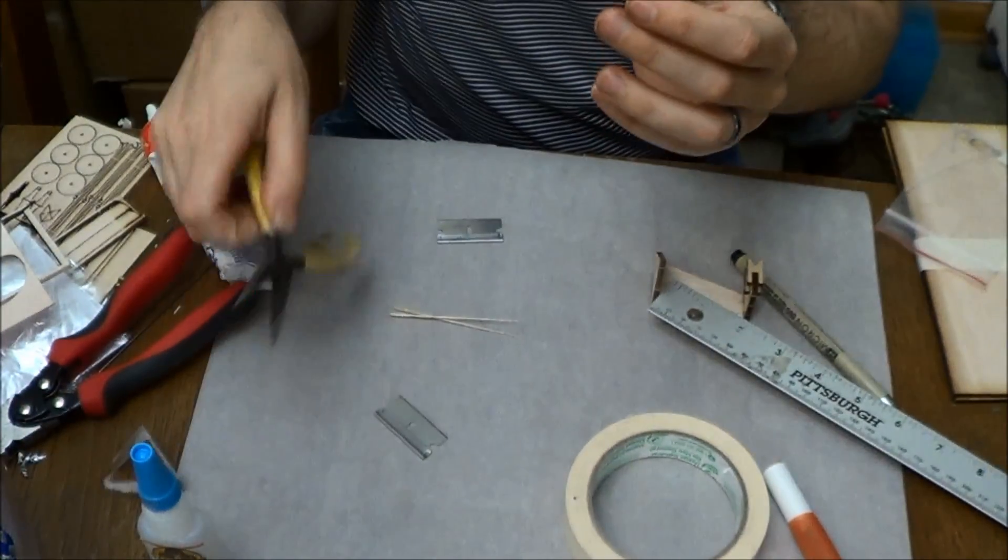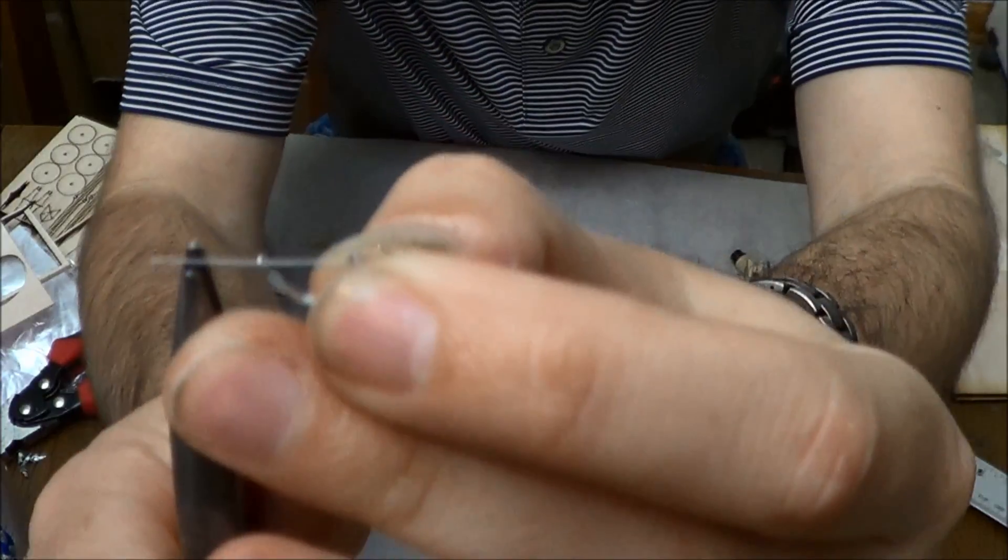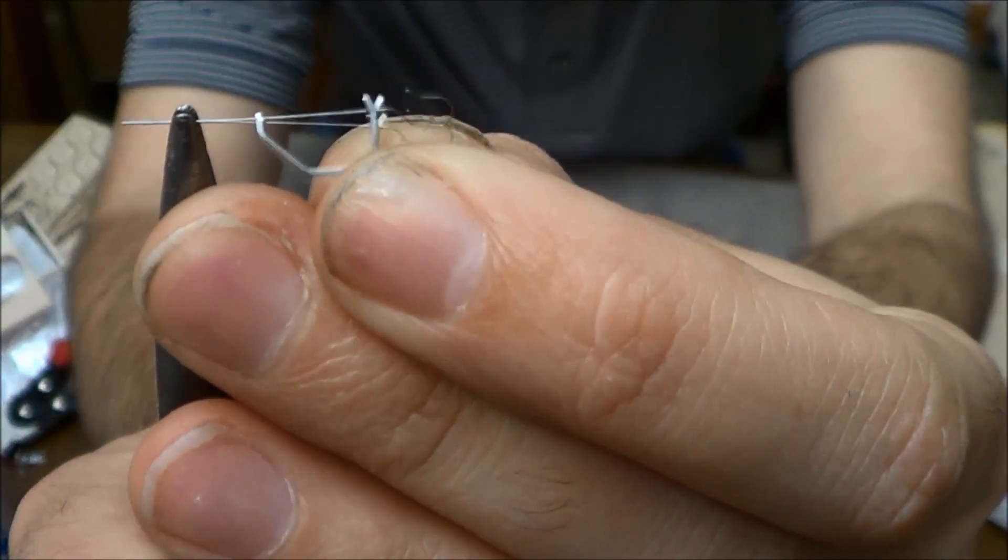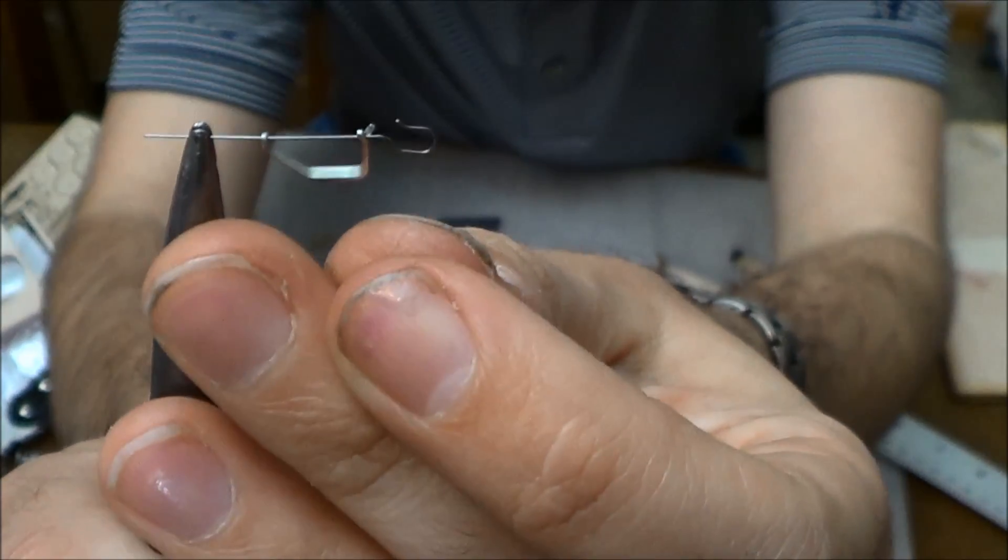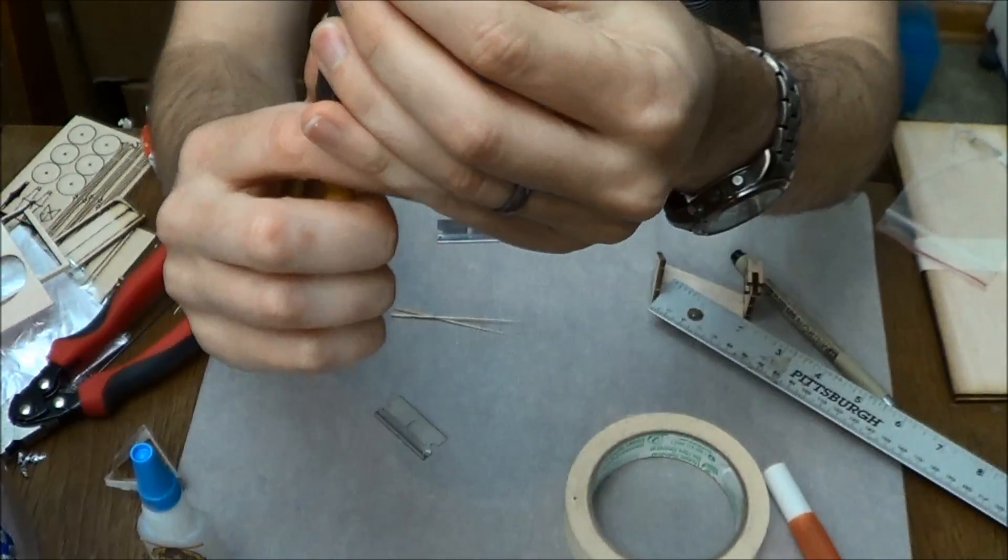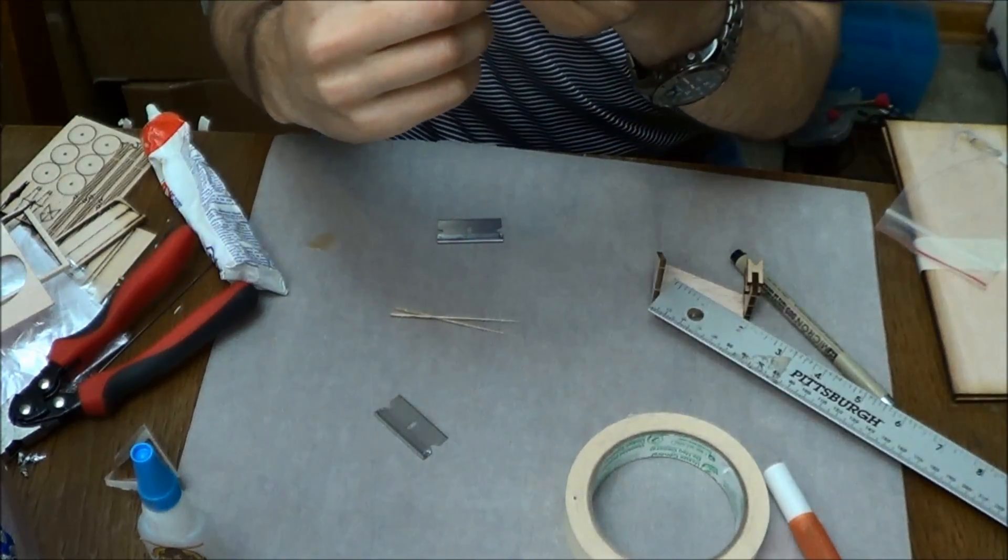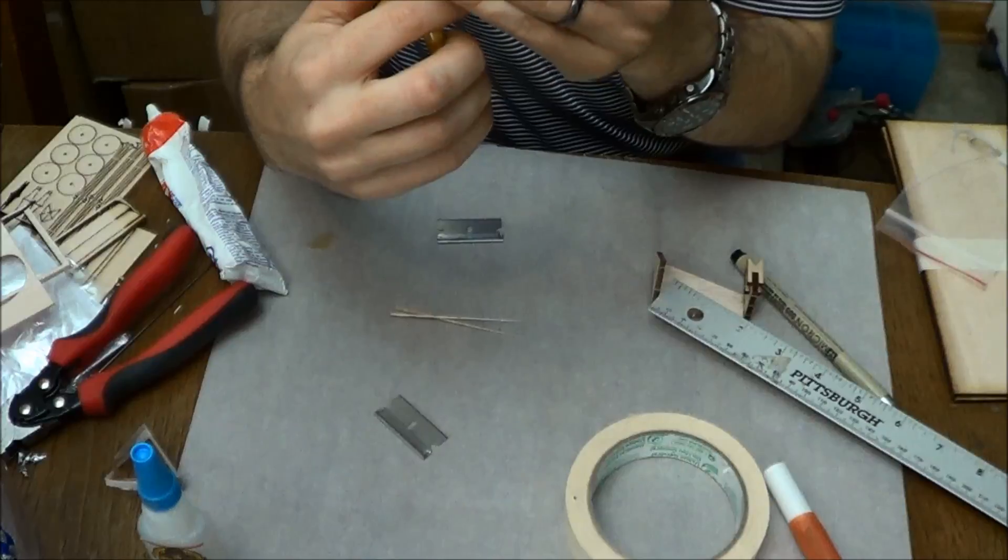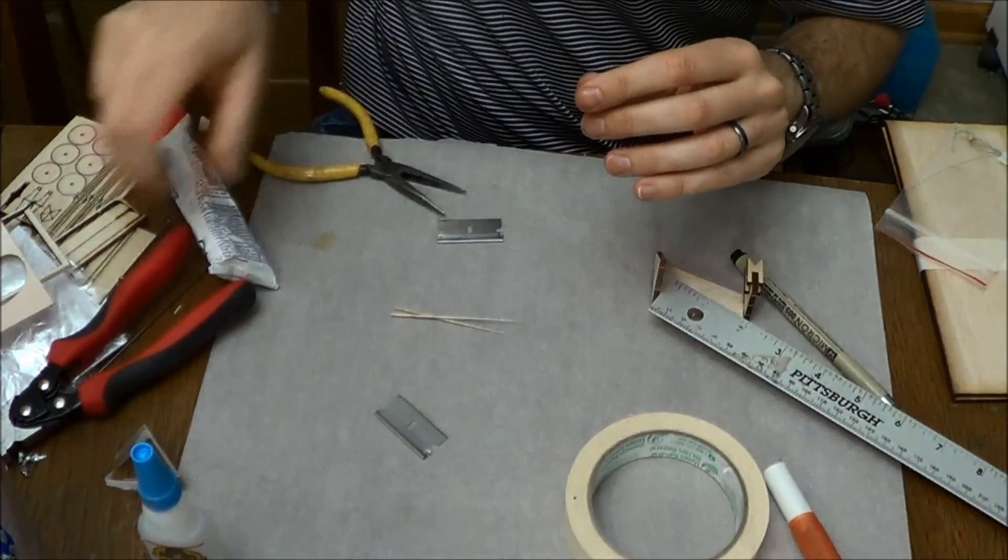And now we're going to measure out about this much extra. So you see that? We're going to bend this over. And if you're wondering how much extra that was, that's 3 sixteenths of an inch. And now we're going to snip the end.